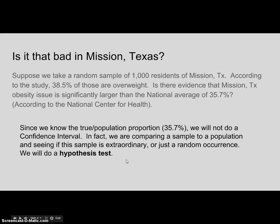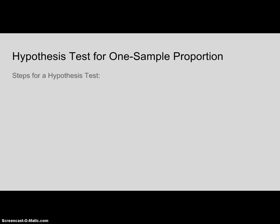When we don't know the true proportion, we would estimate it using a confidence interval. But we're not doing a confidence interval here because we're trying to see if the sample that I have is extraordinary — is it just a random occurrence, or is the true percentage what it is? If it's strange, then there's something different going on. So we're doing a one-proportion, one-sample hypothesis test.